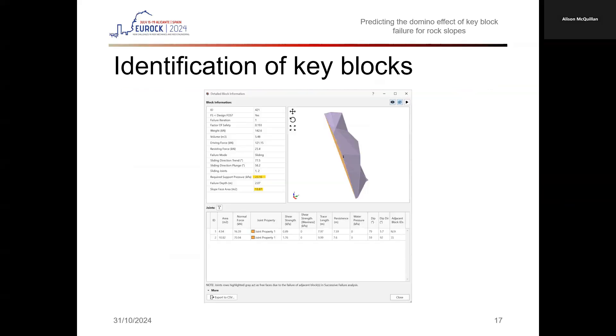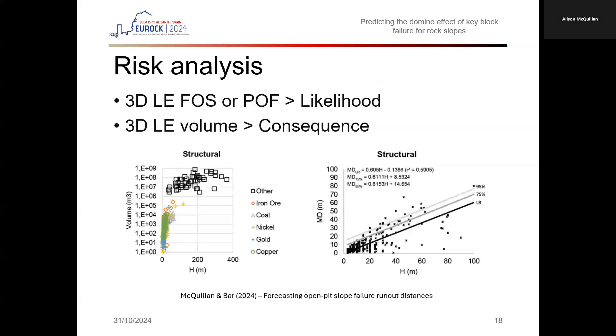For every block that is computed, we are also returned with a required support pressure and slope face area, so we can readily calculate the minimum support force required to increase the key block's factor of safety to the design acceptance criteria, which in this model was 1. Each block's volume is also calculated, which can be useful information for estimating the consequence of failure by referencing empirical charts which predict run-out distance using volume. So by moving to 3D limit equilibrium analysis, we can now calculate both the quantitative likelihood of failure in terms of a factor of safety or probability of failure and estimate consequence of failure, as well as identify key blocks for stability analysis and risk management.